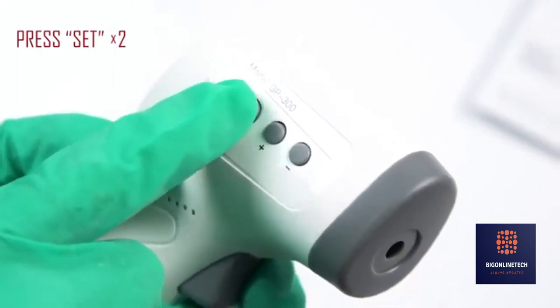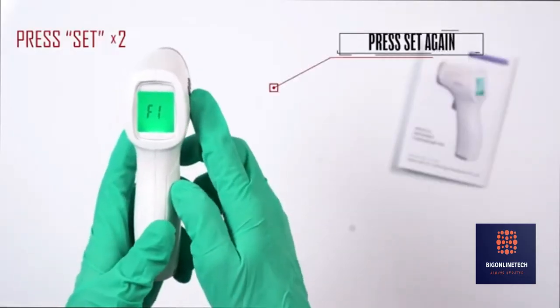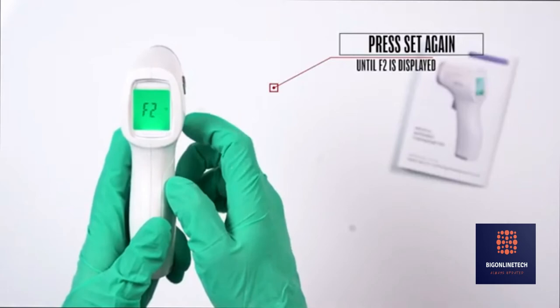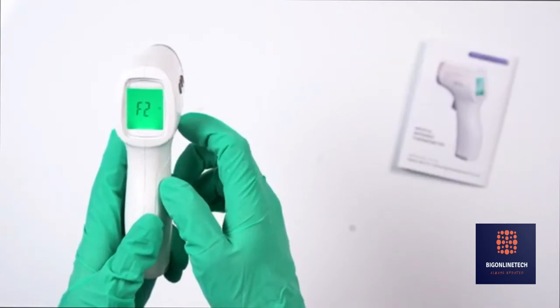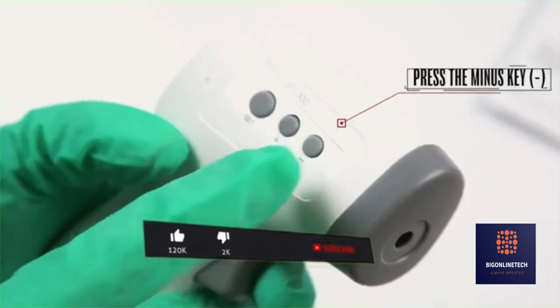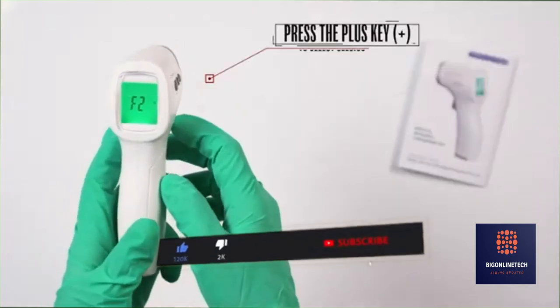Press set twice until F2 is displayed, then press minus key once to switch to Fahrenheit.